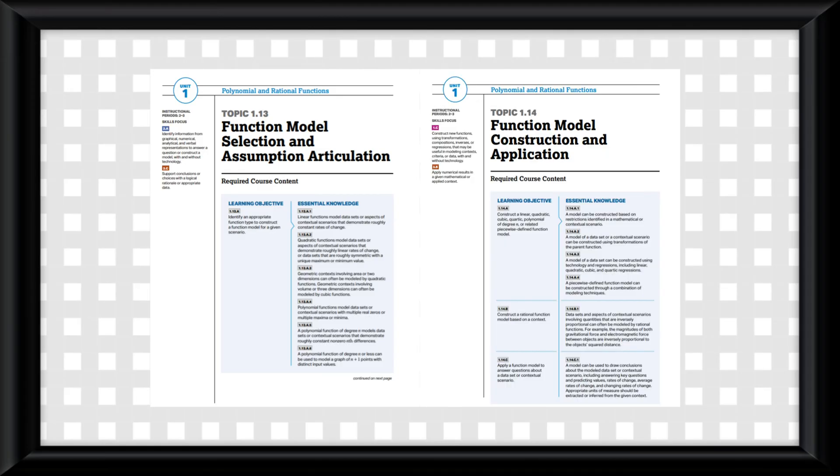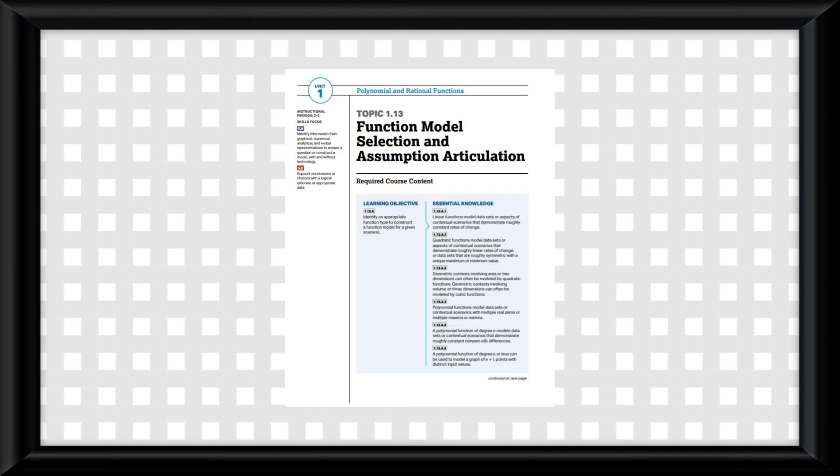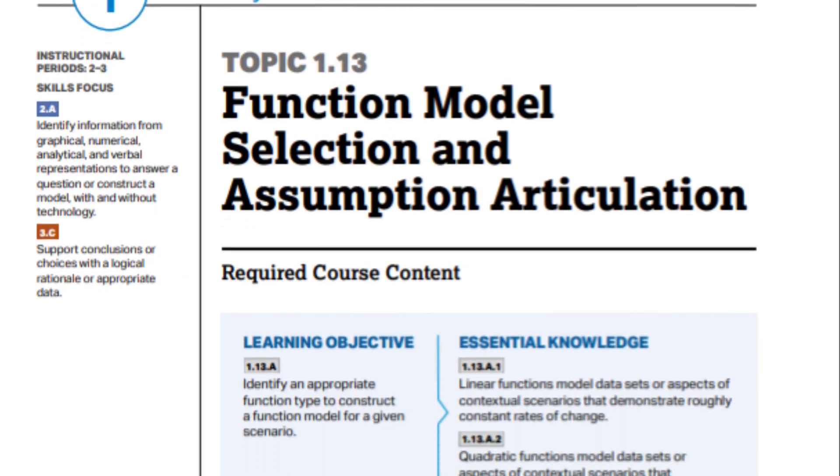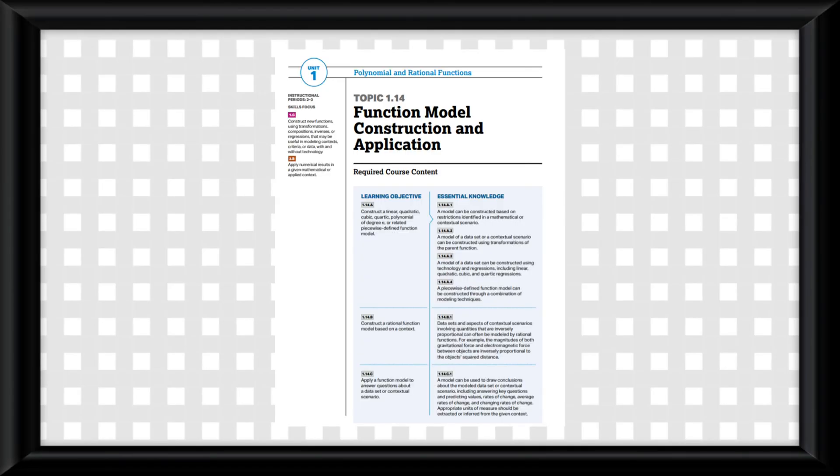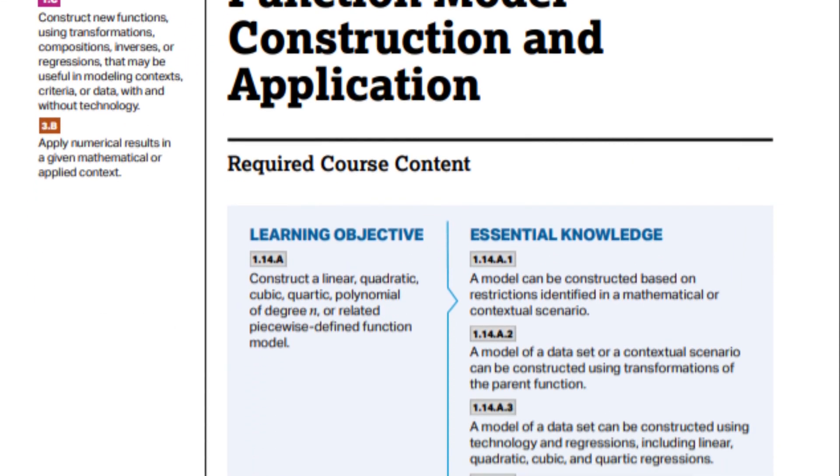Topics 1.13 and 1.14 are practically the same. 1.13 is about predicting function models by context clues, while 1.14 tells you how to actually construct these functions.